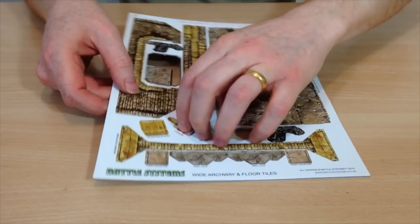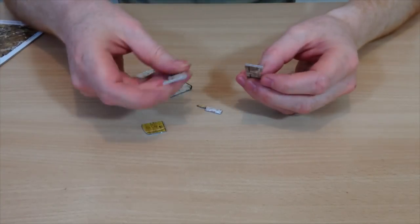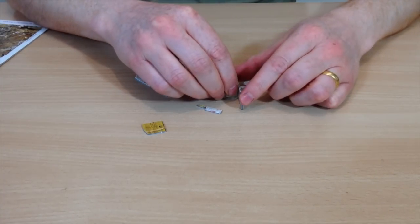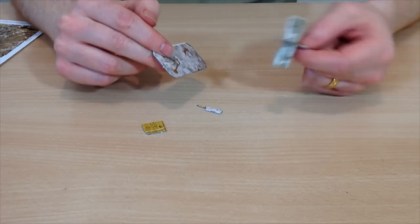The butcher's block is basically just like the table from the room items. You've got a couple of pieces here which we just slot together like so, and then if you wanted to glue those bits together you could do.